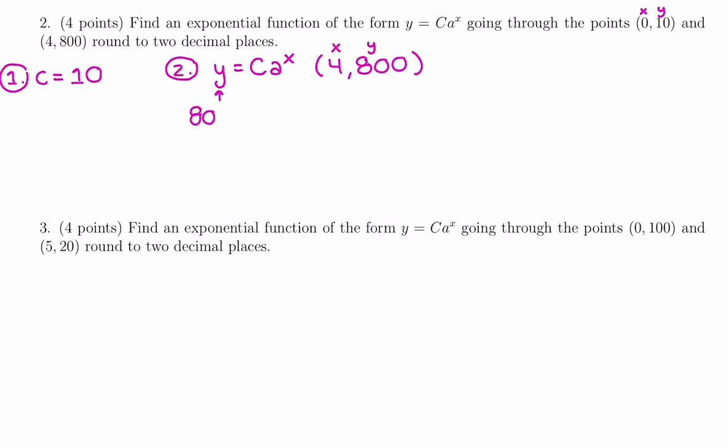So we have our x and our y that we're going to plug into the formula. The y value should be 800. C we just said was 10 from our first step. We're solving for a, and the x value it's raised to is the fourth power. First thing we can do is divide both sides by 10. So we get 80 equals a to the fourth.